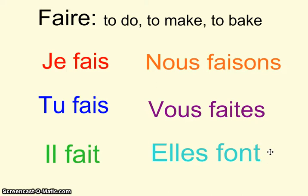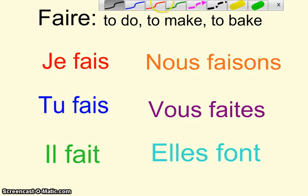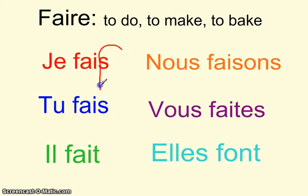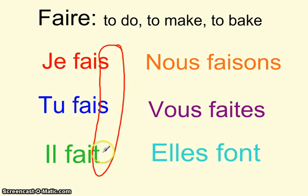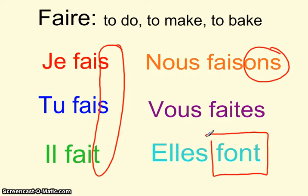Think for a minute what patterns you might recognize. I see a couple that we've already talked about several times. Par exemple, vous avez SST — ça c'est un motif, un pattern que nous avons vu déjà. Aussi, là vous avez la terminaison ONS comme normal. Et aussi, vous avez FOND comme les autres verbes aller, faire et avoir.